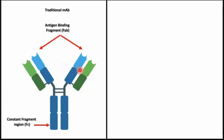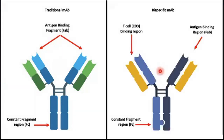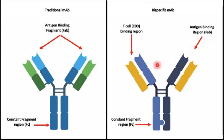So they both bind to the antigen on the cancer cell surface. On the other hand, the bispecific monoclonal antibody looks similar, but the main difference is that the arms in the bispecific monoclonal antibody are engineered to be one for antigen binding region and the second one binds to the CD3 receptor on the T cells.